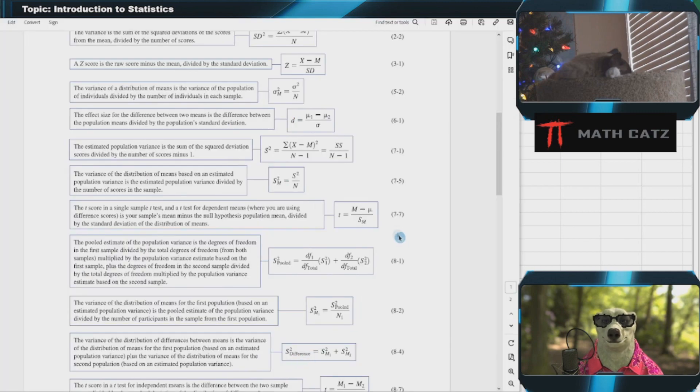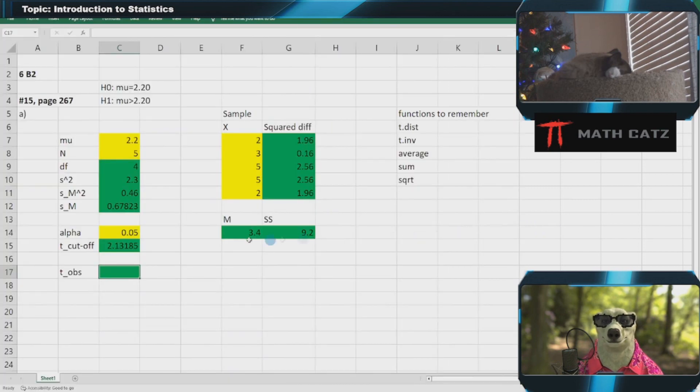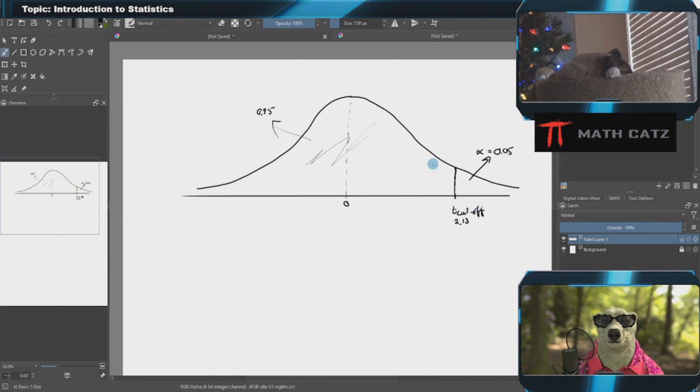Now I need to calculate my observed t score and compare them to see what my decision is in my hypothesis test. The formula is sample mean minus the mean under the null hypothesis over the standard deviation of the comparison distribution, which is the distribution of means. Let me do that calculation: sample mean minus null hypothesis distribution mean over SM, and I get 1.777.